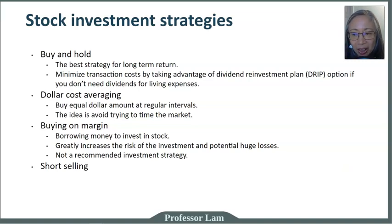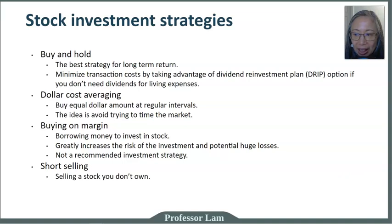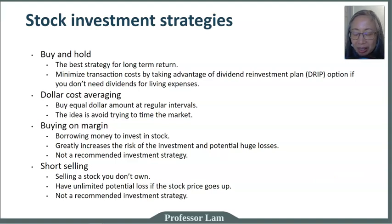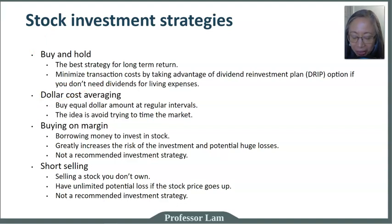Another strategy is short selling, which means you're selling a stock you don't own. This is highly risky because there is no limit on how high a stock price can go, meaning an investor who is short selling can have unlimited potential losses — if the stock price keeps going up, your losses keep piling. This is not a recommended strategy for everyday investors. To sum up: buy and hold is a good strategy, dollar cost averaging is a good strategy, buying on margin is not, and short selling is not.